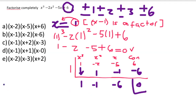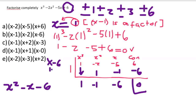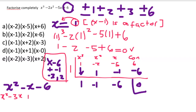The coefficients one, negative one, and negative six form the quadratic X squared minus X minus six. To factorize this, I need two numbers that multiply to negative six and add to negative one. Those numbers are negative three and positive two, since negative three times two is negative six and they add to negative one. So I rewrite as X squared minus three X plus two X minus six.